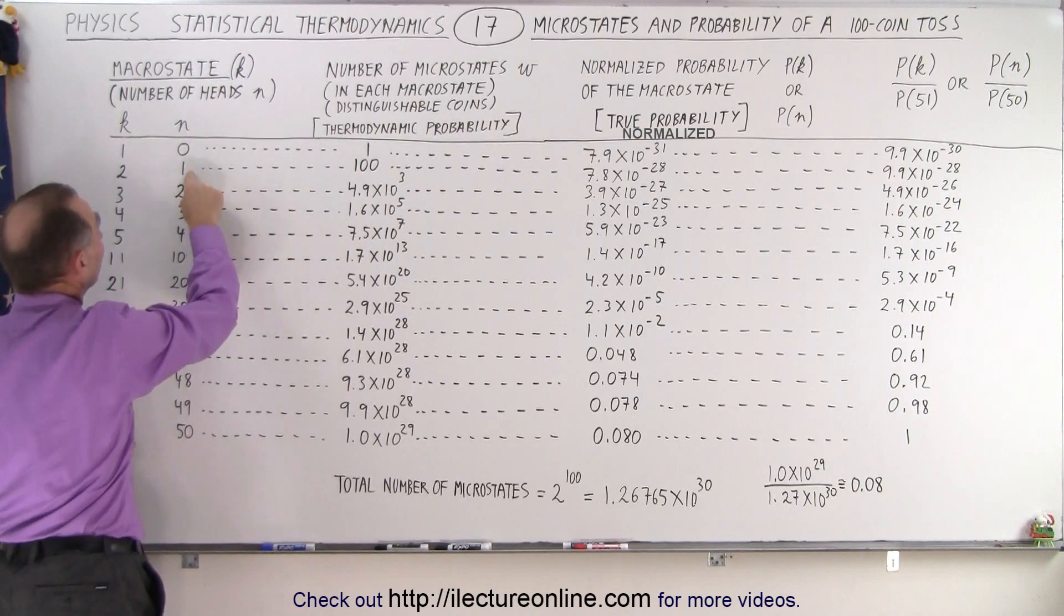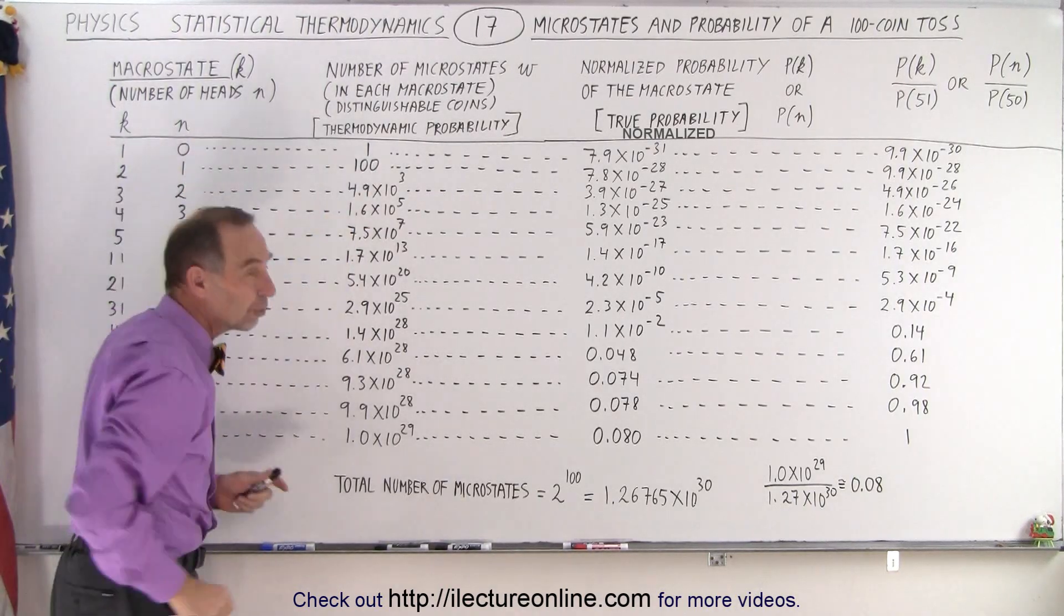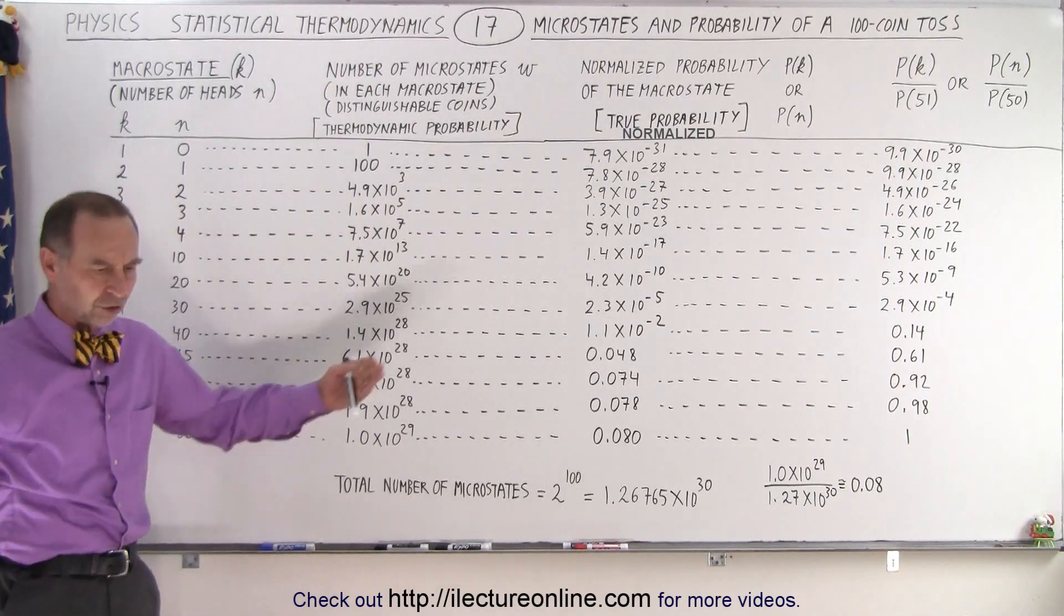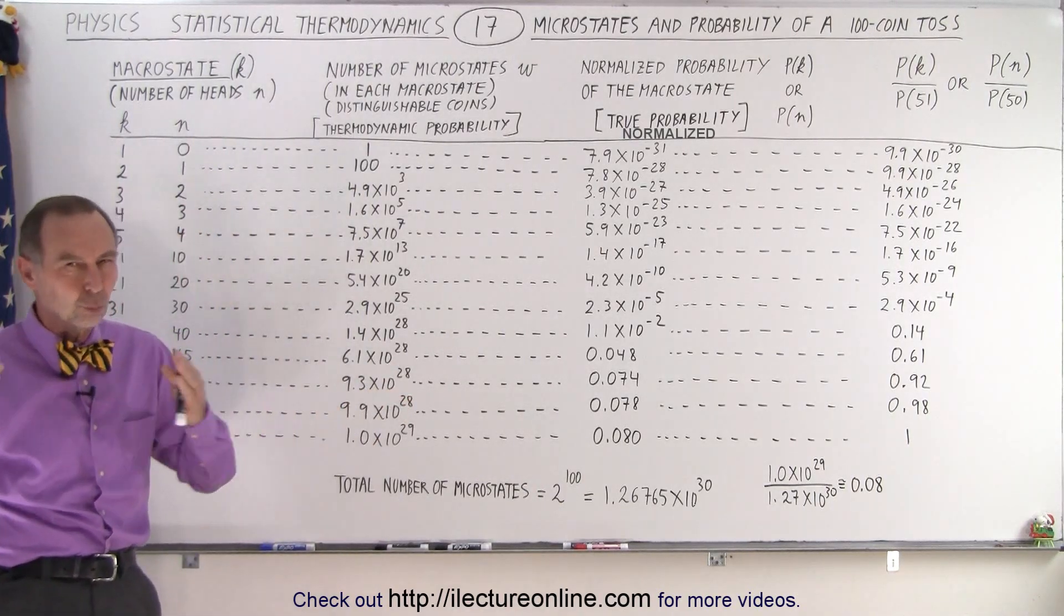N represents the number of heads. One coin should be heads. And notice there's a hundred possibilities. You say, well, wait a minute. There's a hundred coins. One head. Isn't it just one possibility?